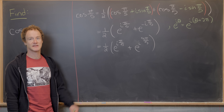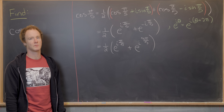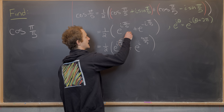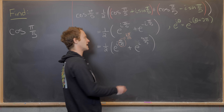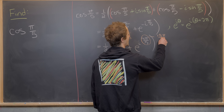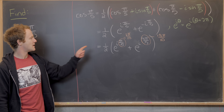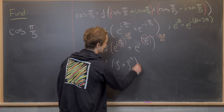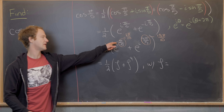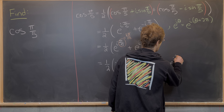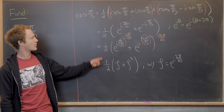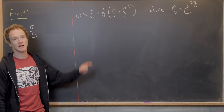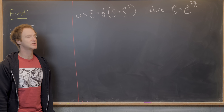Next, we rewrite π/5 as 2π/10 and 9π/5 as 18π/10, so the numerators are multiples of 2π. This lets us use the theory of roots of unity more easily. We introduce the notation ζ = e^(i2π/10), the primitive 10th root of unity, so cosine of π/5 equals ½(ζ + ζ⁹).